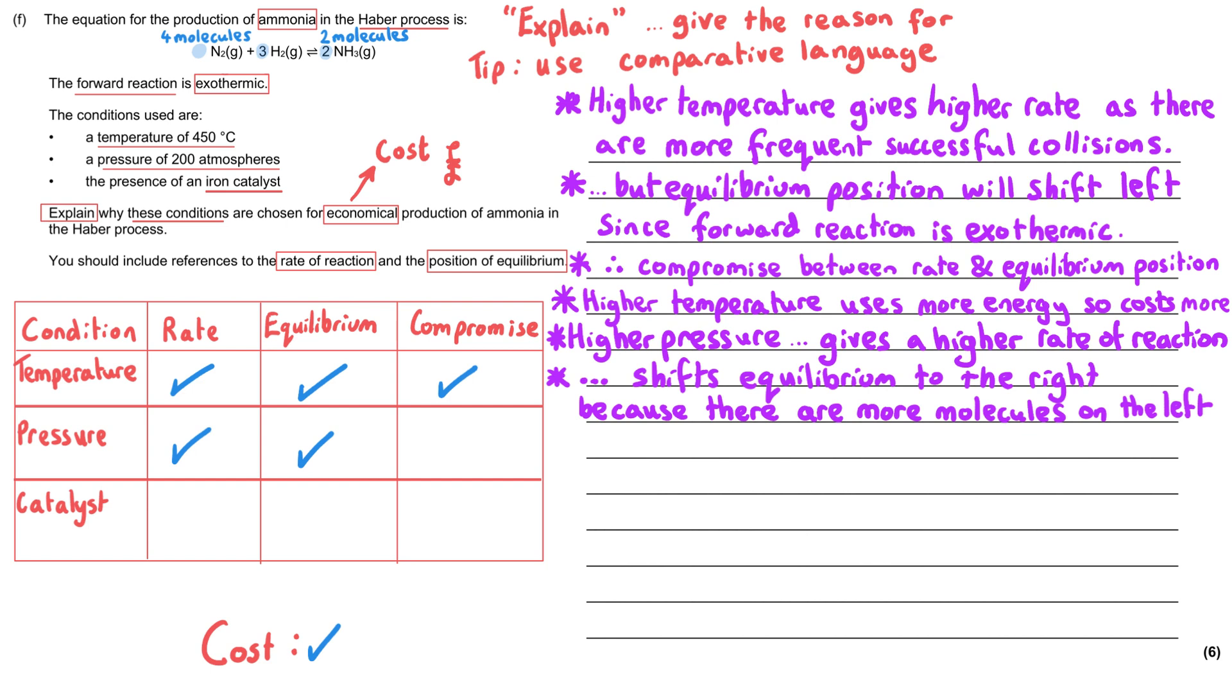A higher pressure will require more energy and that will therefore increase the costs. And a higher pressure will also require a stronger reaction vessel in order to withstand that high pressure, so that will increase the costs as well.